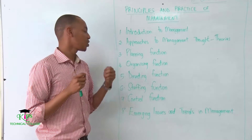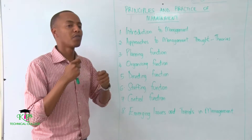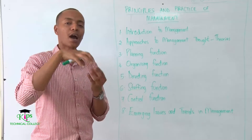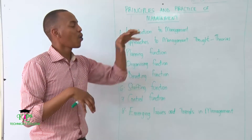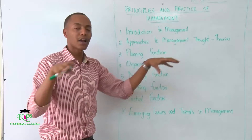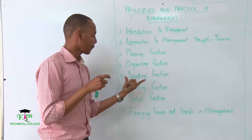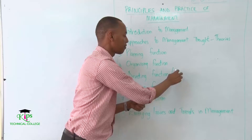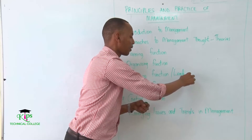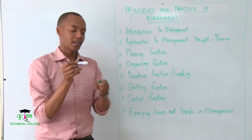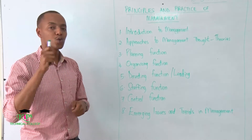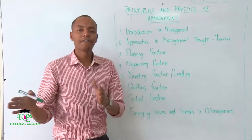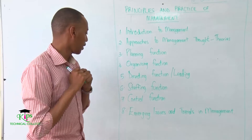In the organizing function, it is the job of the manager to come up with organizational skills or to decide how the company shall be organized — whether the company shall have different branches and so on. Then you have the directing function, also called the leading function. A manager has to be able to conduct some leadership, and at this point we'll talk about what's the difference between a manager and a leader.